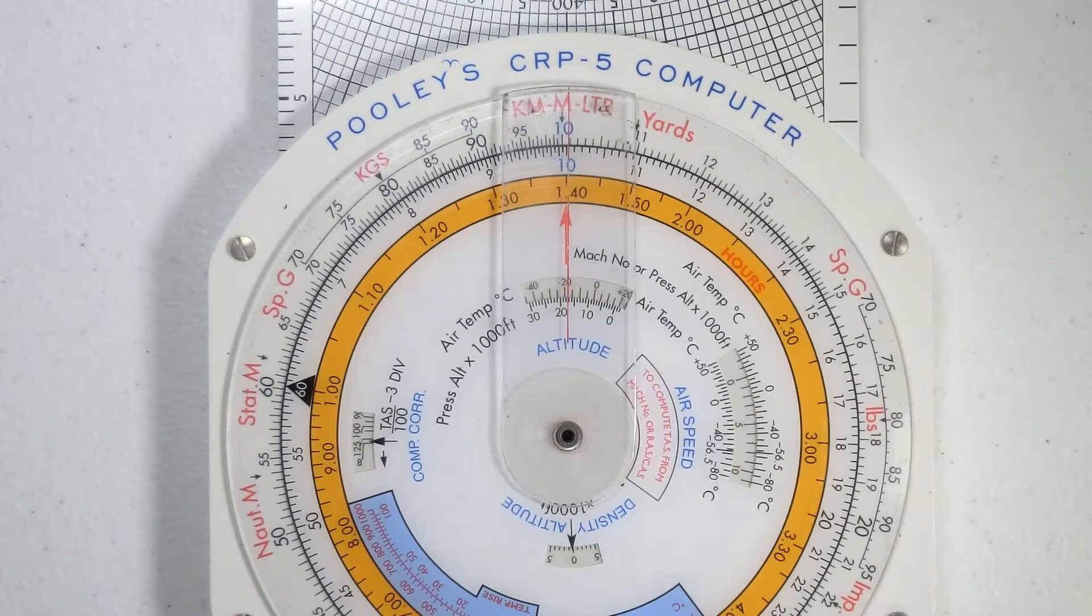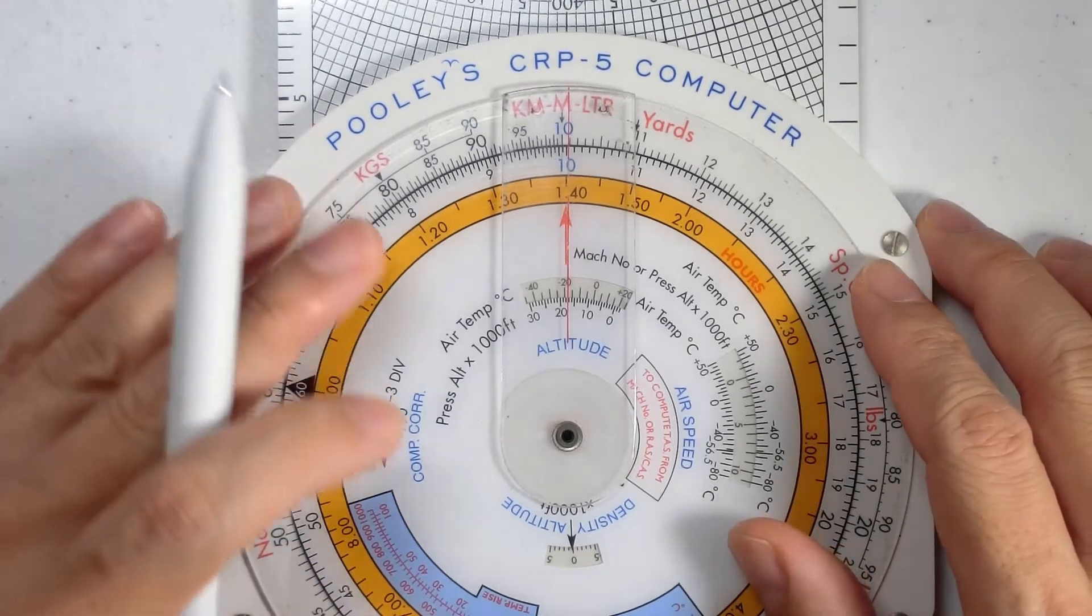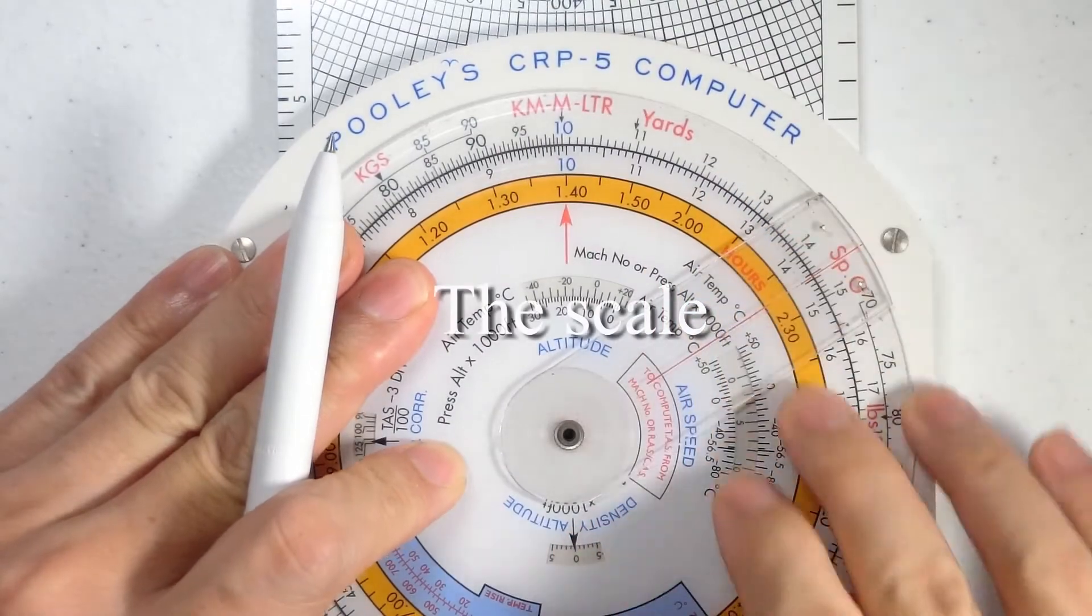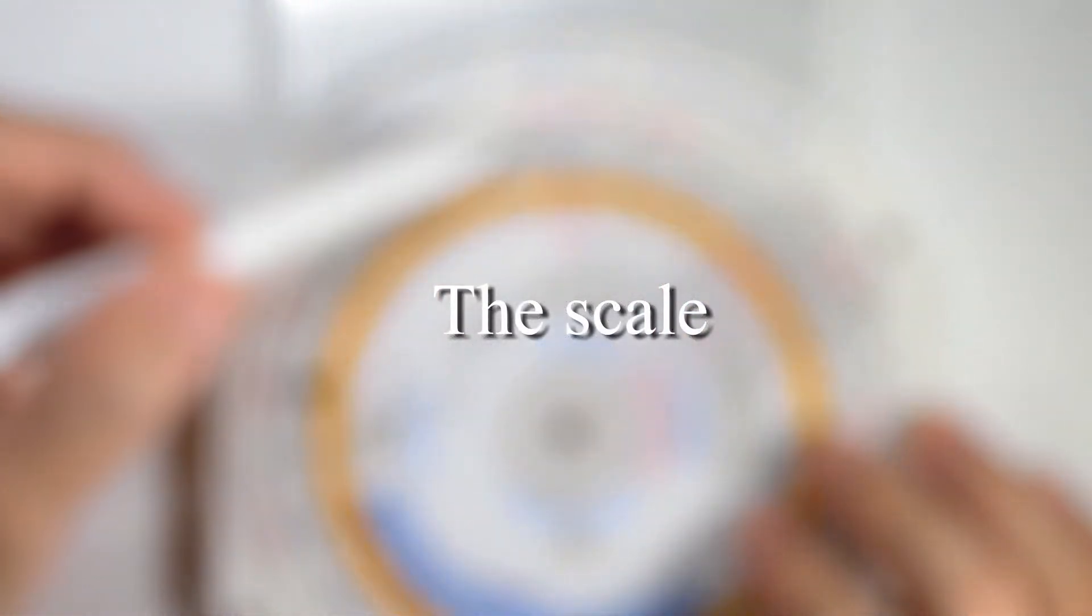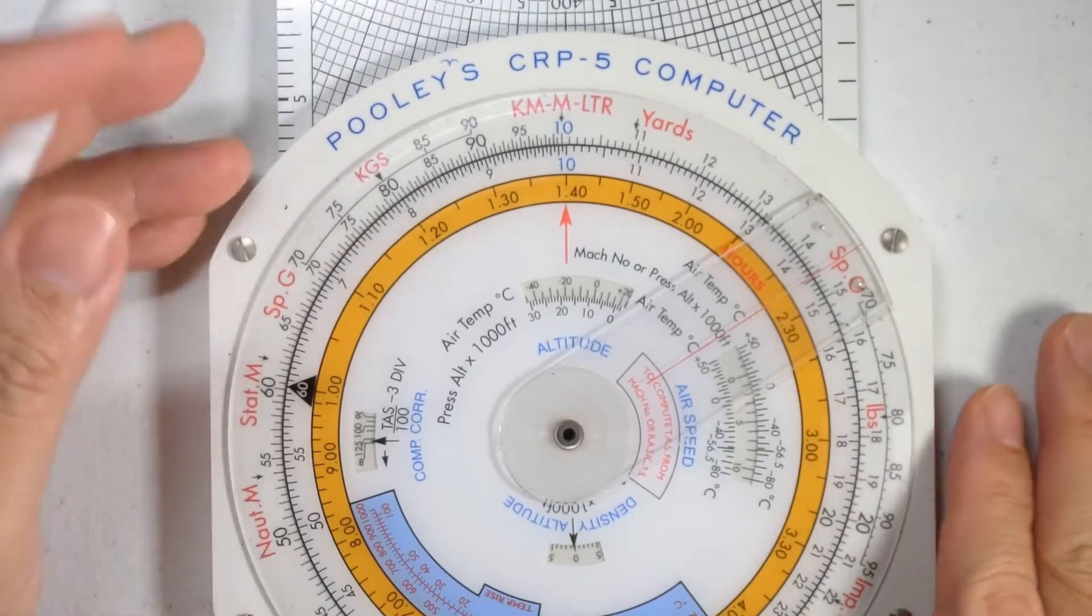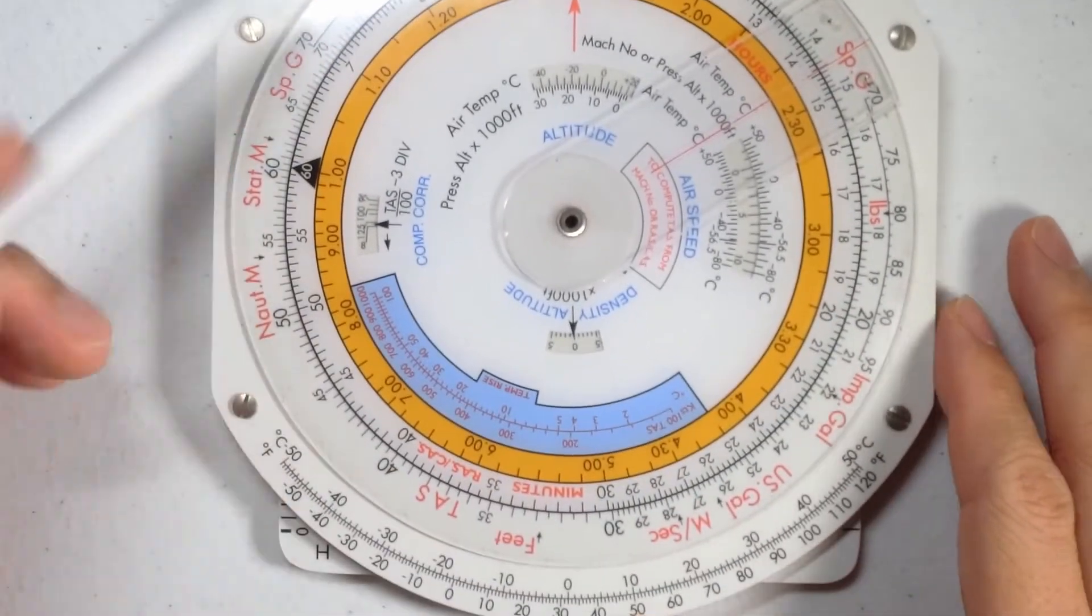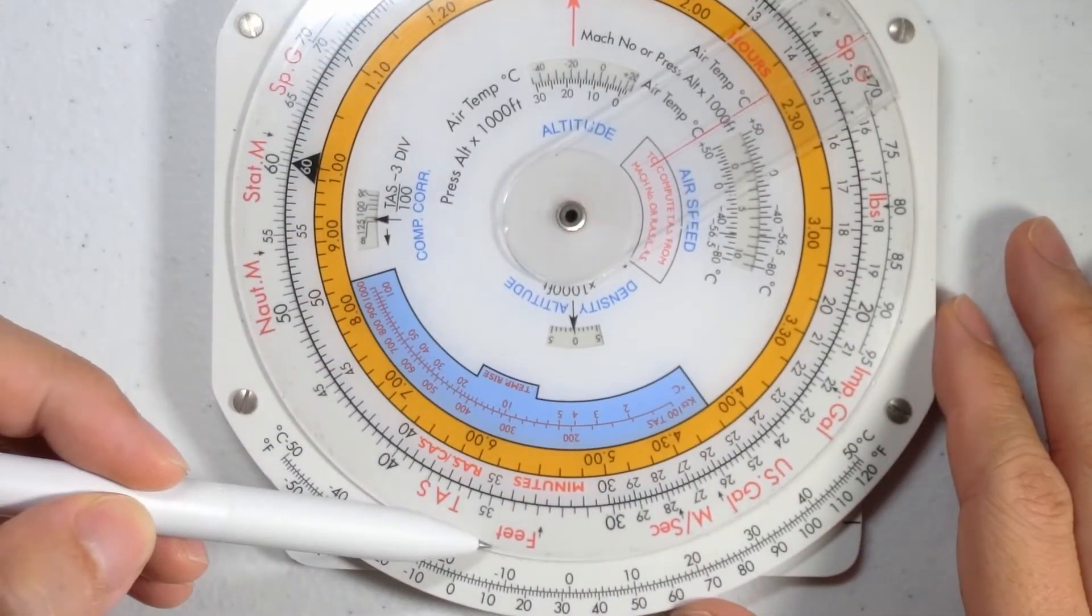First of all let me introduce you to the scale. At the top of the CRP-5 you can see we have a kilometers, meters and liters scale. At the bottom of the CRP-5 we find feet.